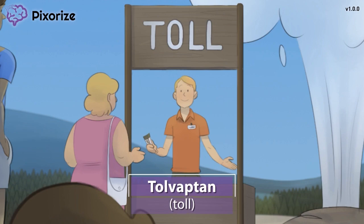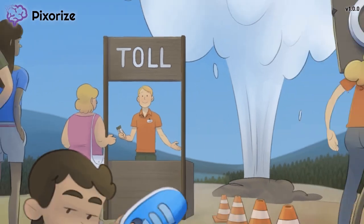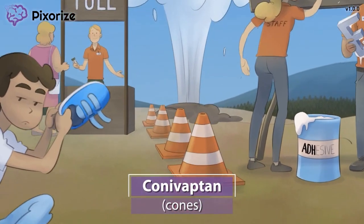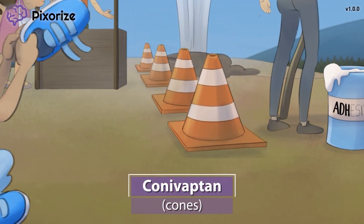Next, take a look at those big cones. These cones make sure that people don't skip the toll and that they don't get too close to the geyser. These cones should remind you of conivaptan, the second of the vaptans covered in this scene — cone for conivaptan.